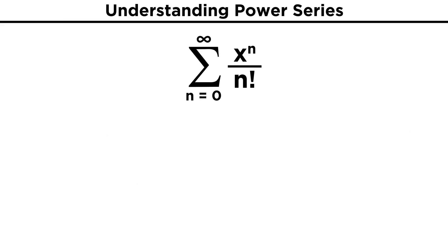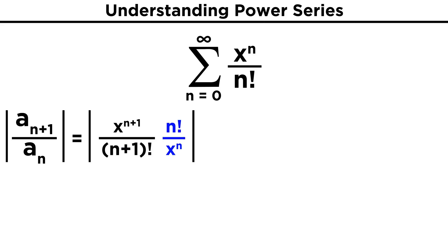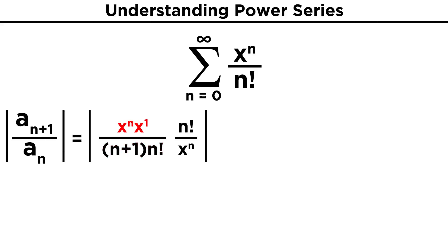Let's try an example and see how this applies. Take x to the n over n factorial. Let's try the ratio test. We get x to the n plus one over n plus one factorial, and then given the original series in the denominator, we just multiply by the reciprocal, or n factorial over x to the n. We've simplified something like this a couple of times by now, so let's change n plus one factorial into n plus one times n factorial, and let's change x to the n plus one into x to the n times x to the one. Most of this cancels out, and we are left with x over n plus one.